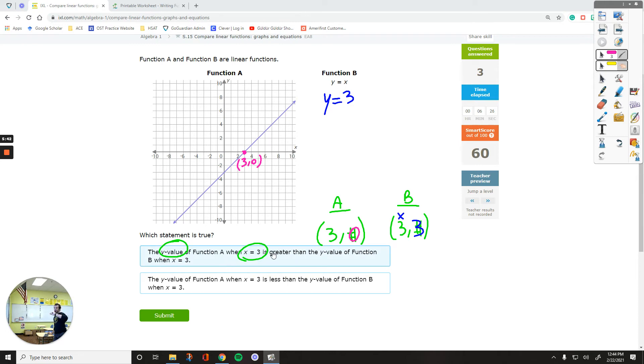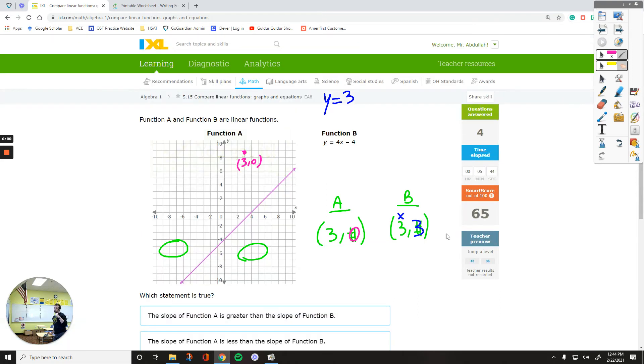The y-value of A is greater. That's a false statement. The y-value of A, when x equals 3, is less. Yes, when x equals 3, the y-value of A is 0. Whereas the y-value of B equals to 3. So this is going to be a little more complicated than the others.